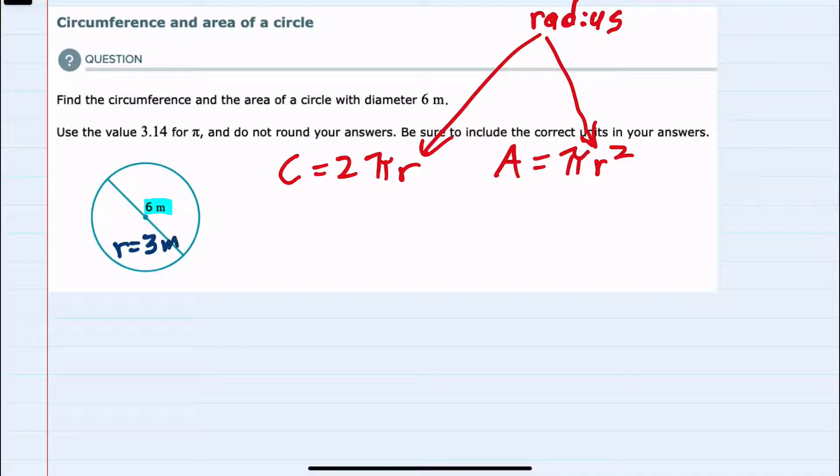So our radius is 3 meters. Using that, and then using 3.14 for π, I can substitute in for circumference.